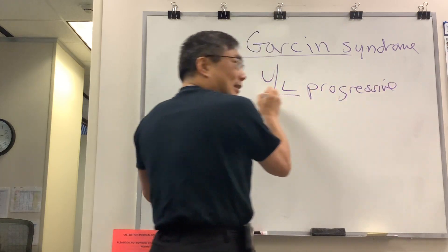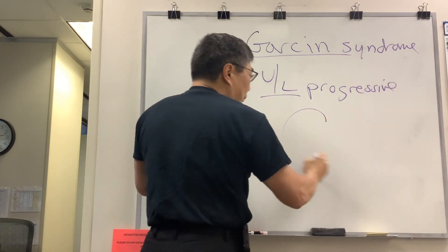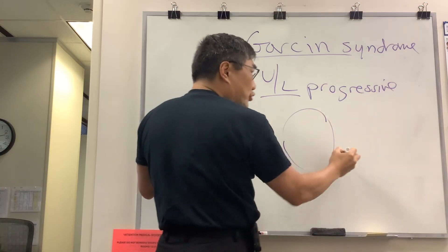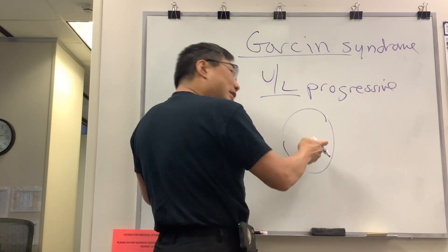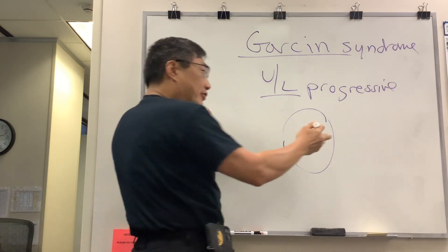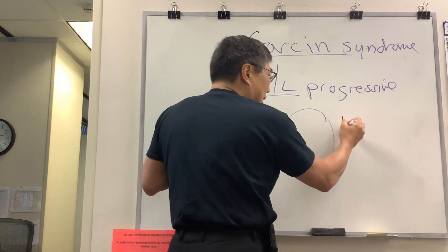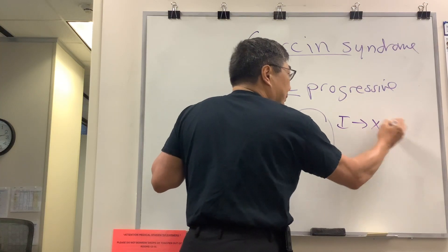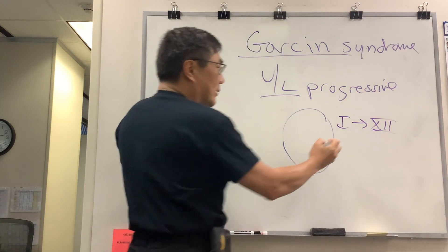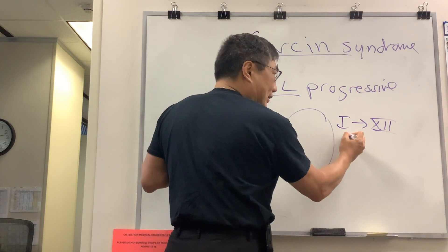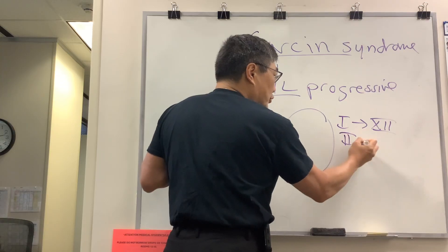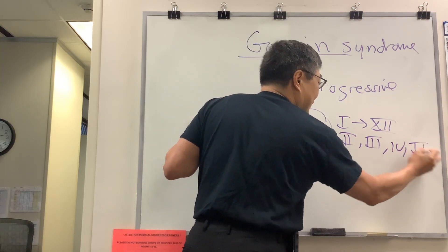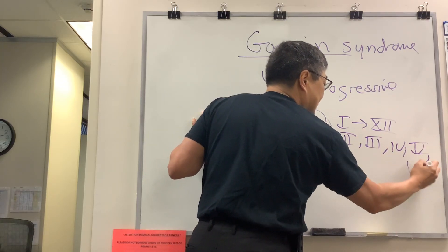So it's all on the same side, and what it normally means is you're jumping from one cranial nerve to the next cranial nerve. They're numbered, as you know, one through twelve. However, the most common ones for us are going to be two, three, four, five, and six.